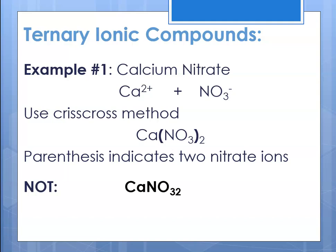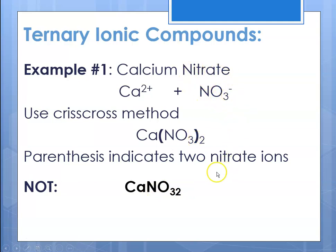We cannot write CaNO₃₂ because that formula would tell us that calcium is bonded to one nitrogen and 32 oxygens. In order to show that there are two of the whole nitrate ion, we need to put it in parentheses. We can't write NO₃₂.